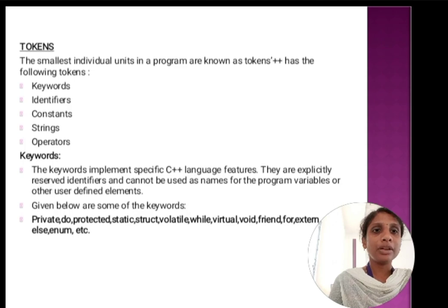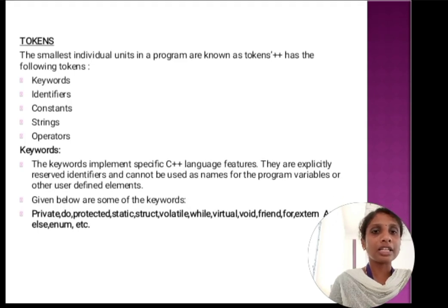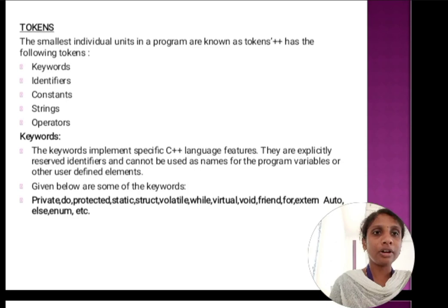The keywords implement specific C++ language features. They are explicitly reserved words. It cannot be used as identifiers or naming for programming variables or other user-defined elements. Keywords are the reserved words. We can't use them for naming variables or functions or array names. The given below are some examples of keywords: private, do, protected, static, structure, struct, volatile, while, virtual, void, friend, for, extern, auto, else, enum, etc. These words cannot be used as normal identifiers or function names or variable names.